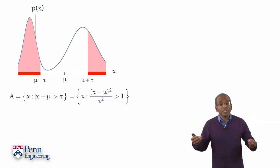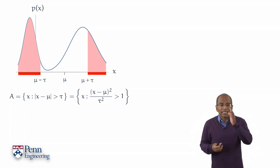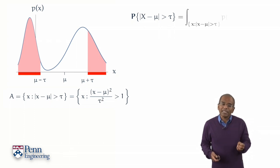We are interested in the probability, reading it out in words, that x deviates from mu in absolute value by tau or more. This, of course, is given by an integral. A limiting sum.